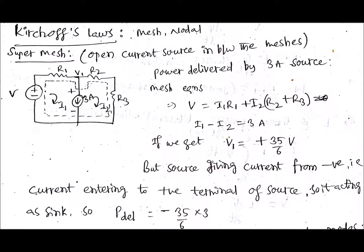Here in this circuit, if you are asked to find out power delivered by 3 ampere source, then you need to write mesh equations. So how you are going to write here? Because there is super mesh, that means one current source is there in between first and second mesh.